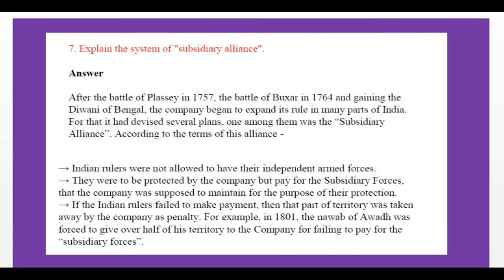Explain the system of subsidiary alliance. After the Battle of Plassey in 1757, the Battle of Buxar in 1764, and the gaining of Diwani of Bengal, the British East India Company began to expand its rule in many parts of India. For that purpose, it devised several plans, among which was the subsidiary alliance system.